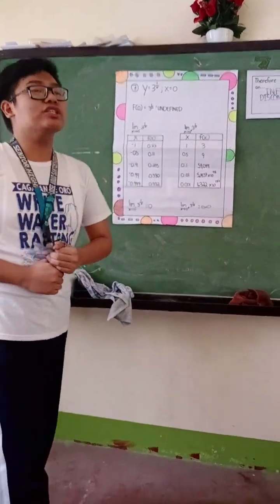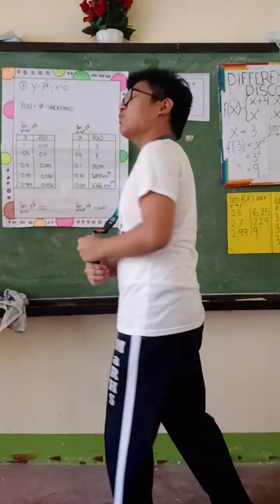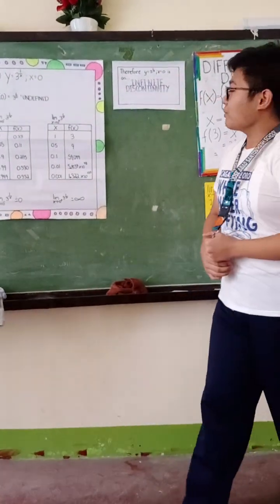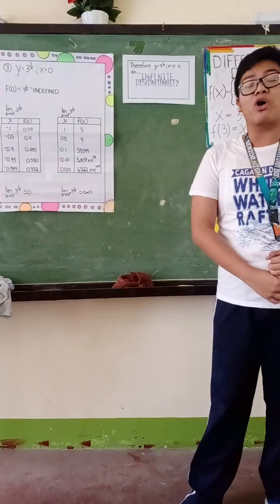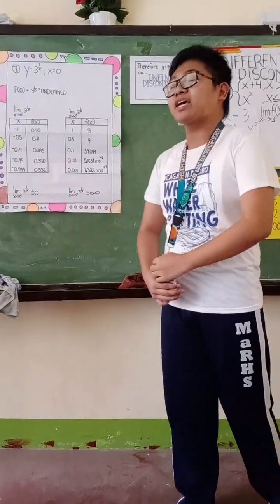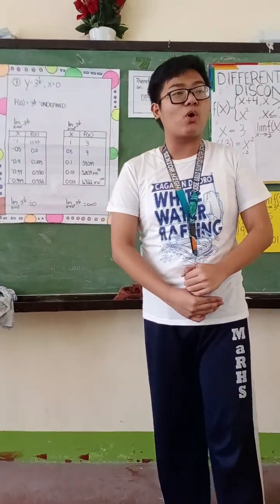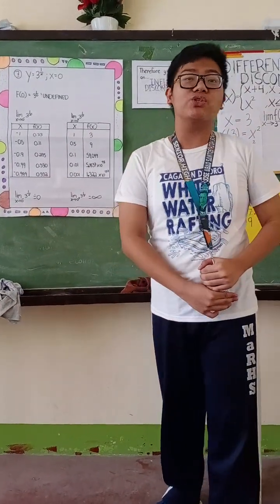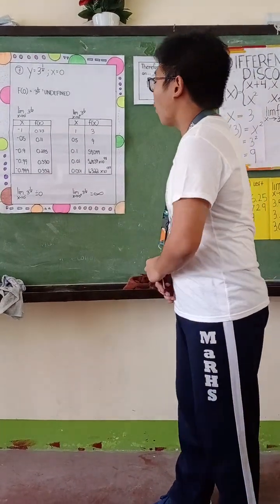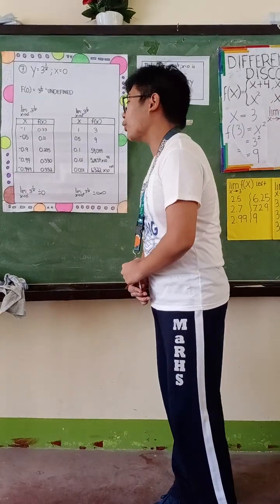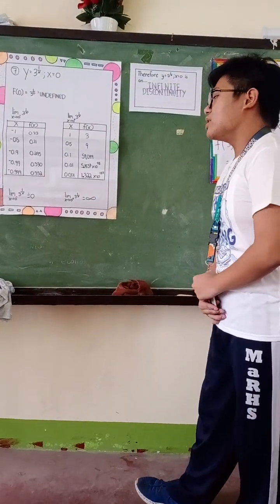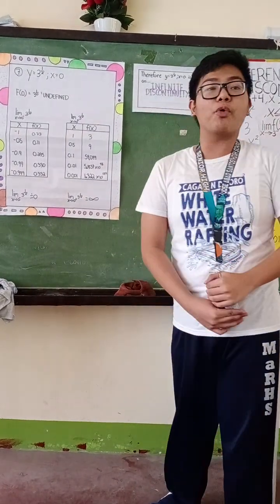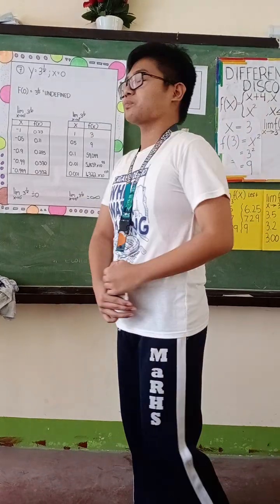Moving on to the other side — the limit of the function 3 raised to 1 over x as x approaches 0 to the right. The values of x to the right are 1, 0.5, 0.1, 0.01, and 0.001.